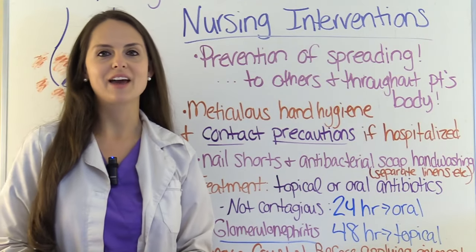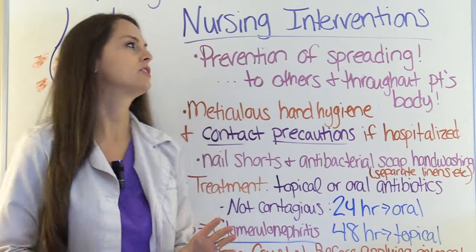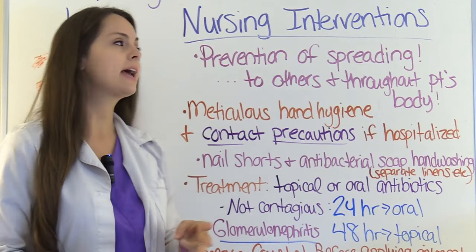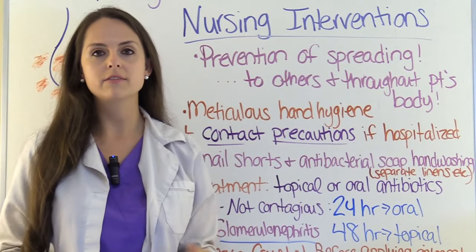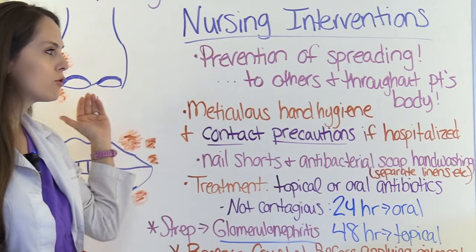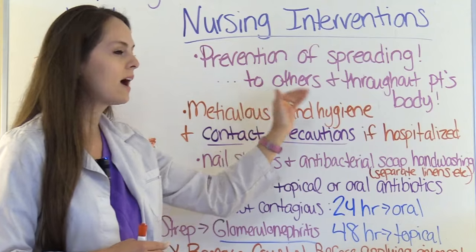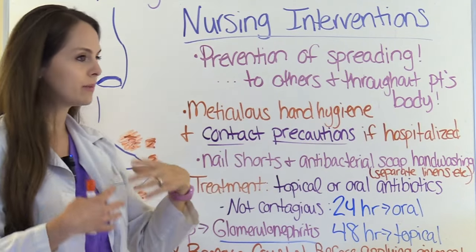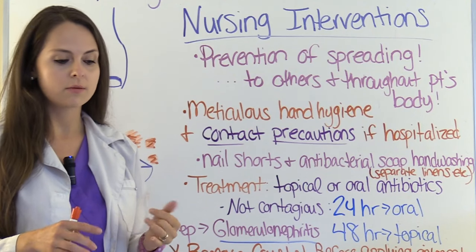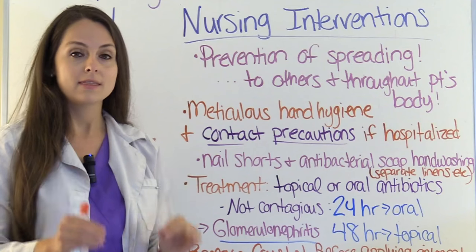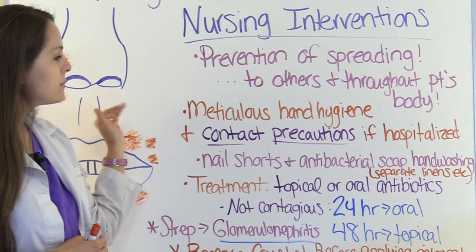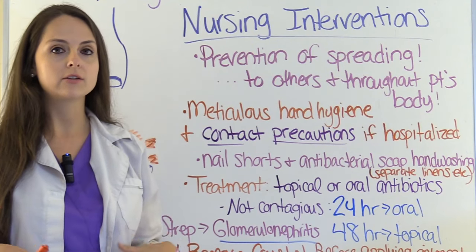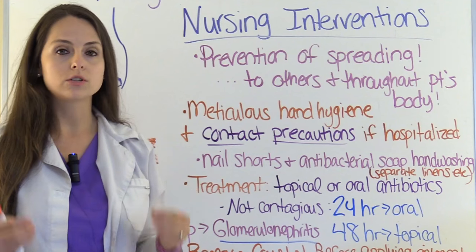Now let's look at nursing interventions for Impetigo. One of the biggest things we're going to do as the nurse is prevent the spreading of this — not only to ourselves but to our other patients, and prevent spreading it throughout the patient's body. Gold standard is meticulous hand hygiene on our part, the patient's part, and their family members' part. If they're at home, educate the parents to use antibacterial soap. If the patient is hospitalized, you'll want to put them in contact precautions — wearing a gown and gloves at all times — and visitors should wear that as well.